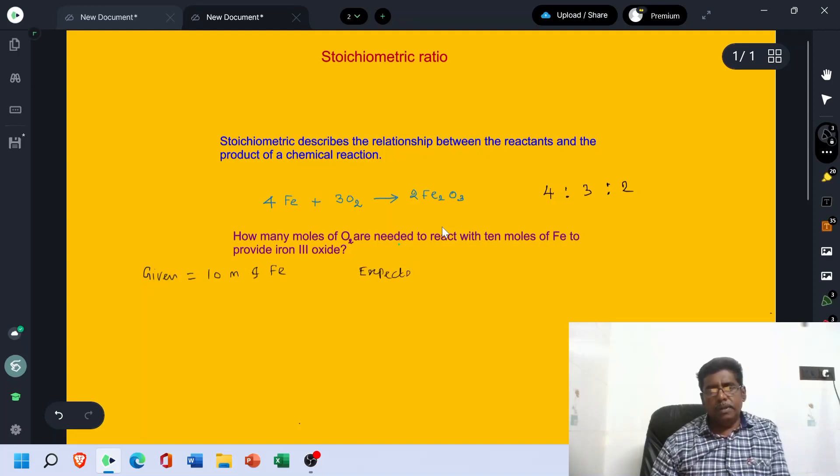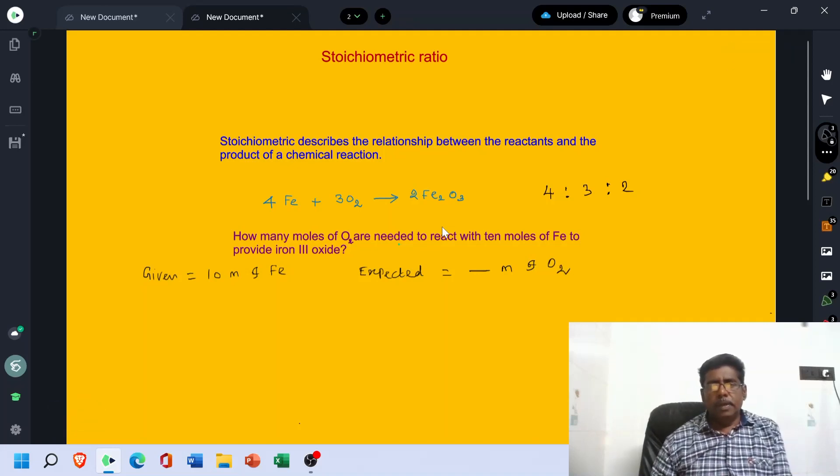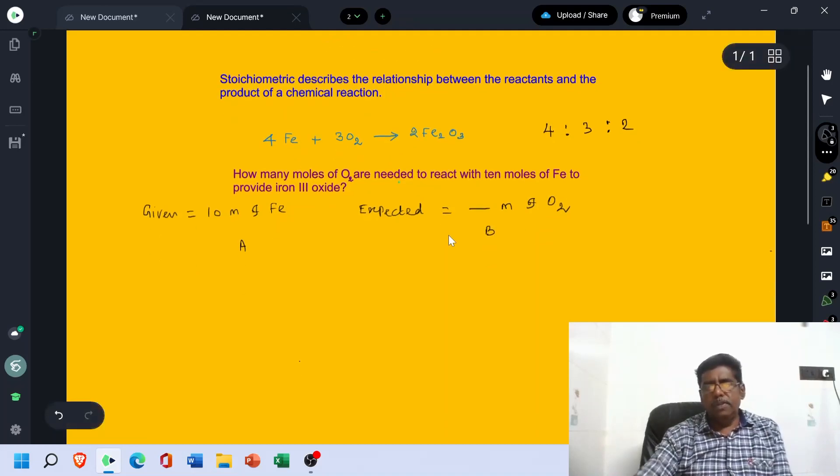Expected is how many moles of O2? Here given is taken as A. Expected is taken as B. Which one is A? Fe is A. Which one is B? O2 is B because we are going to calculate this. Now you have to develop a formula.